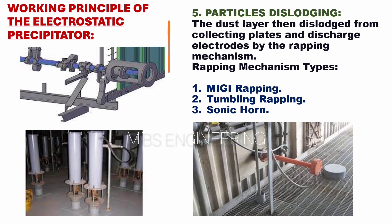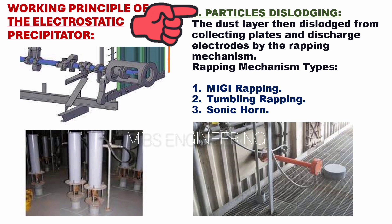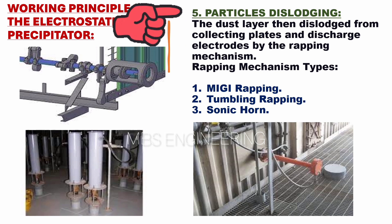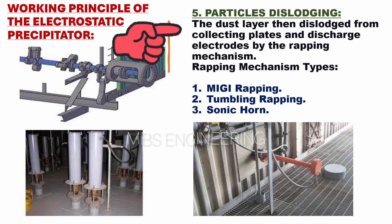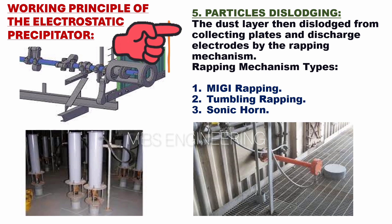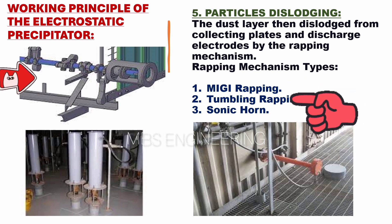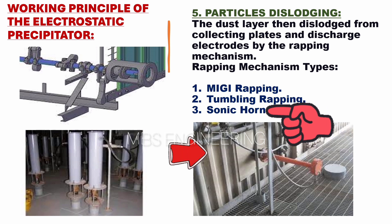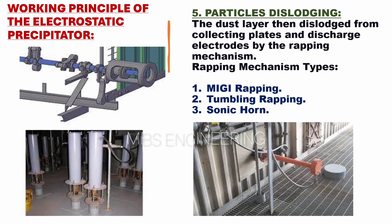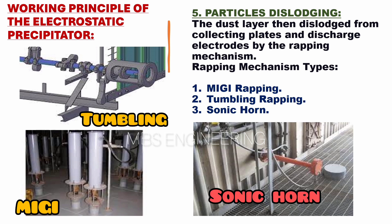The fifth step of the electrostatic precipitator's working principle is particle dislodging. The dust layer is then dislodged from the collecting plates and emitting electrodes by the rapping mechanism. The following types of rapping mechanisms are used: the first is Migi rapping, the second is tumbling rapping, and the third is the sonic horn.